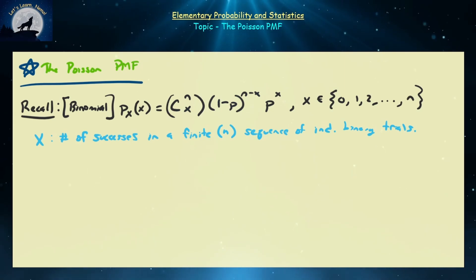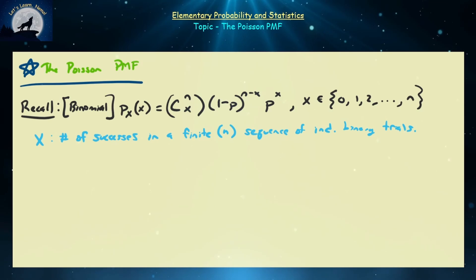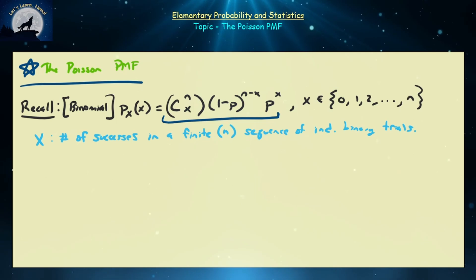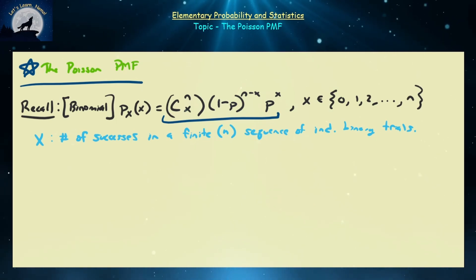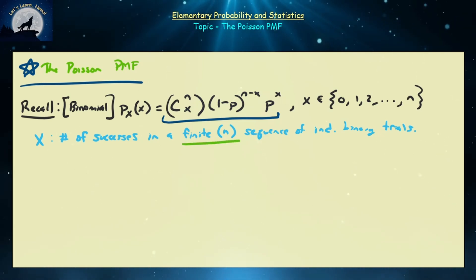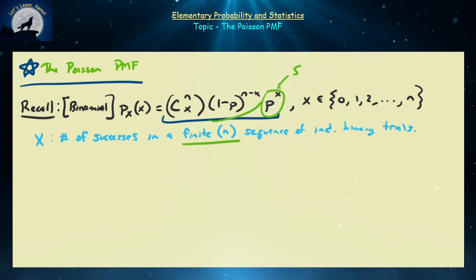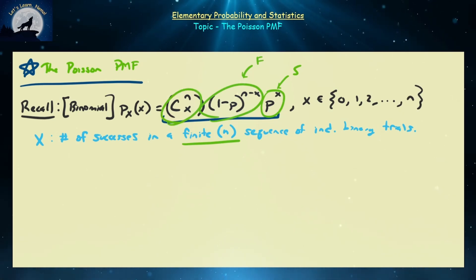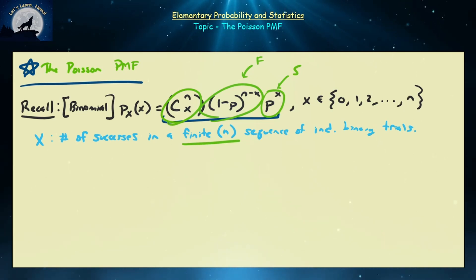Before we get into this new PMF, let's recall a PMF you should have already experienced: the binomial probability mass function. The binomial PMF is given by n choose x, times (1 minus p) to the (n minus x), times p to the power of x. Here, x represents the number of successes in a finite sequence of n independent trials, (1 minus p)^(n−x) corresponds to the number of failures, and n choose x accounts for all rearrangements of those failures and successes.